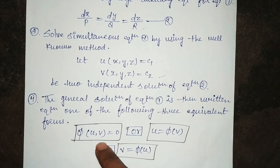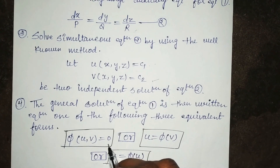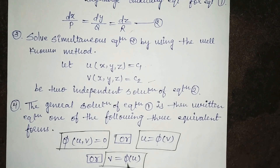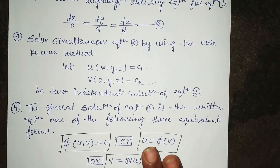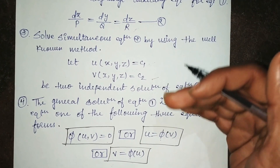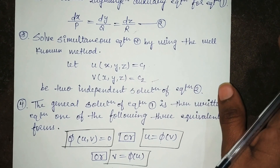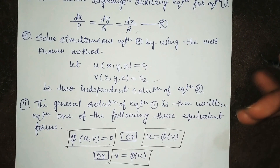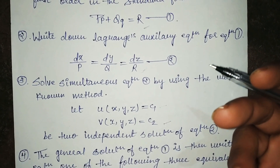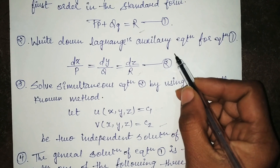The format of your final answer or general solution can be one of three forms. This is the particular method to solve a Lagrange equation only. There are three parameters — you can say three methods to solve the auxiliary equation.